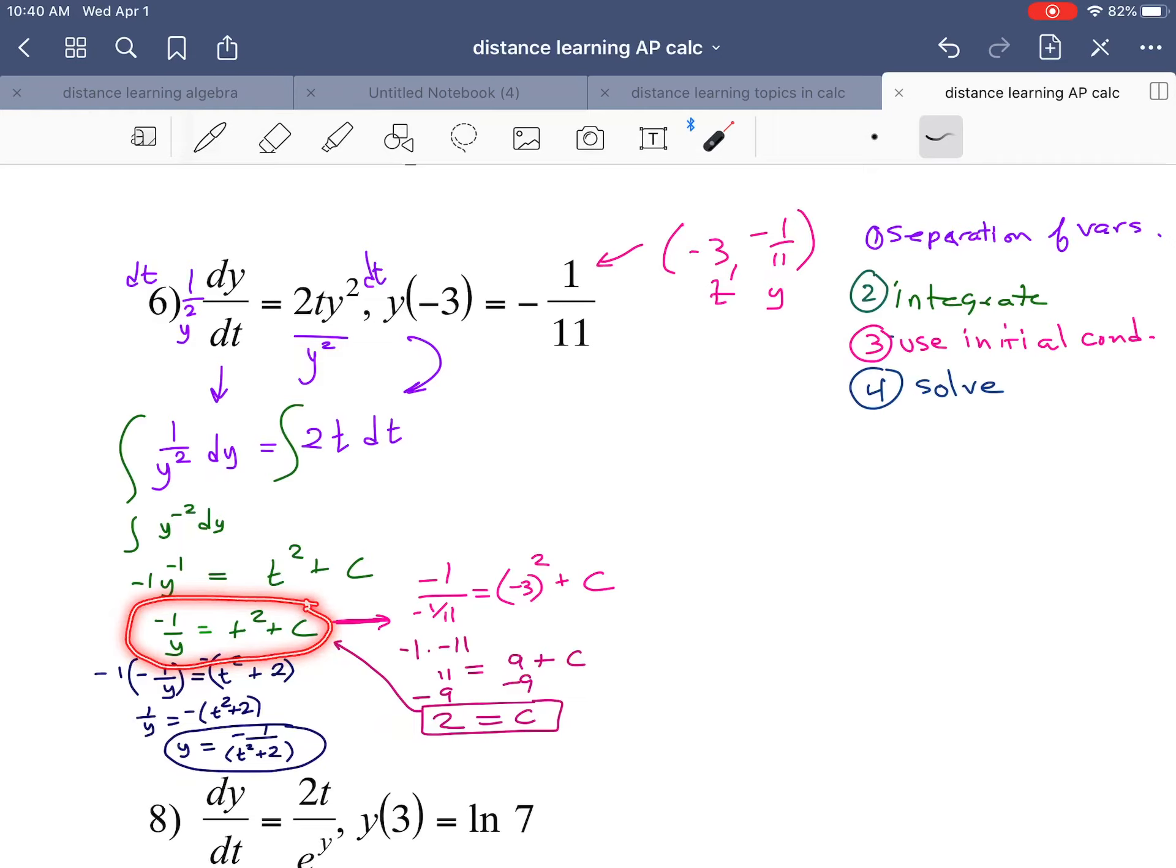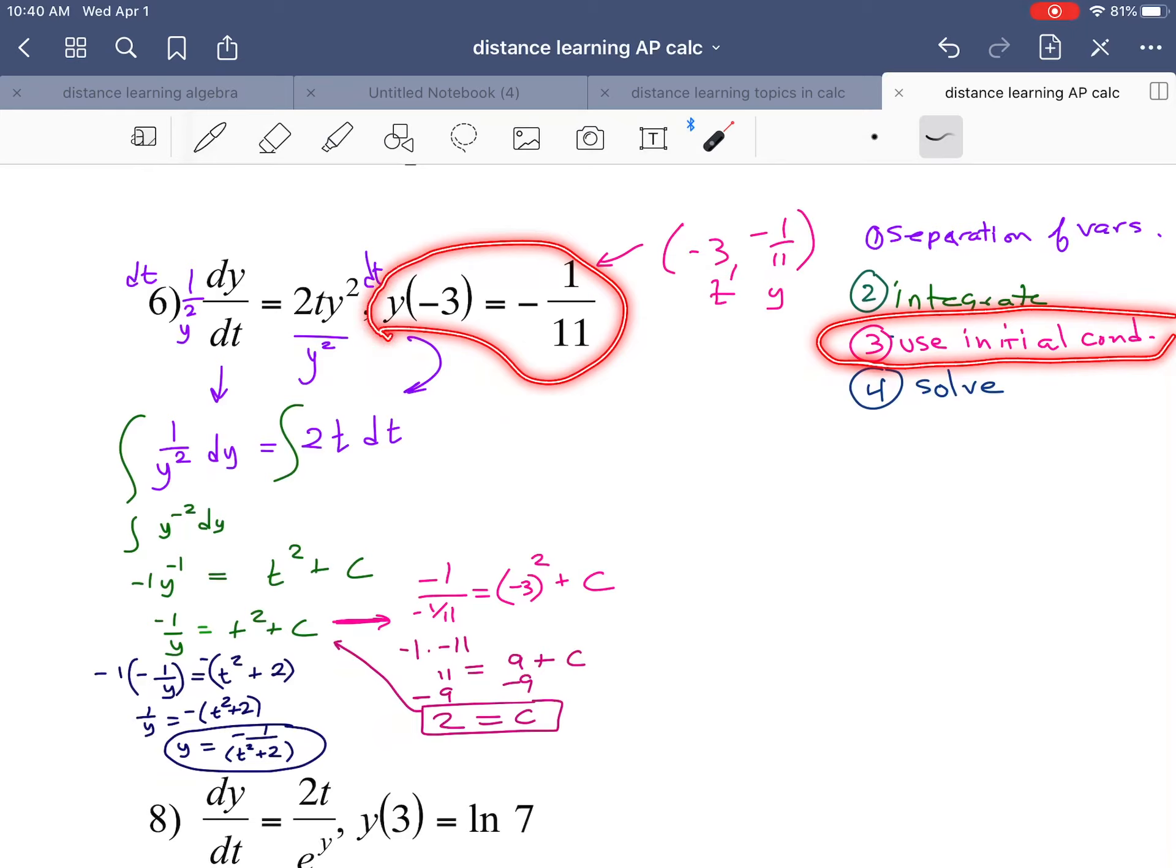So after integrating I get this equation: negative 1 over y equals t squared plus c. I'm going to use my initial condition, so that's this information here. The input is negative 3, the output is negative 1 over 11. So I'm inputting—clearly this is the output, so the input must be t. I'm going to plug in negative 3 in for t.